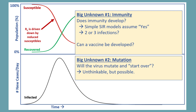There's another big unknown, and that is mutation. We know that there are many strains of the virus, but can the virus mutate and develop a strain that a previously immune person is susceptible to? And the epidemic starts over. We want to believe that's unthinkable, but it is possible.